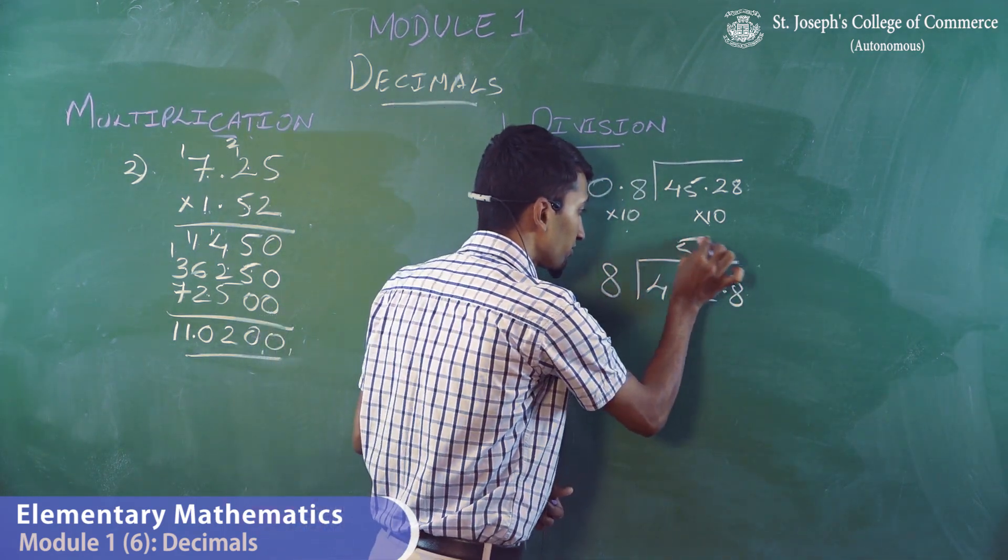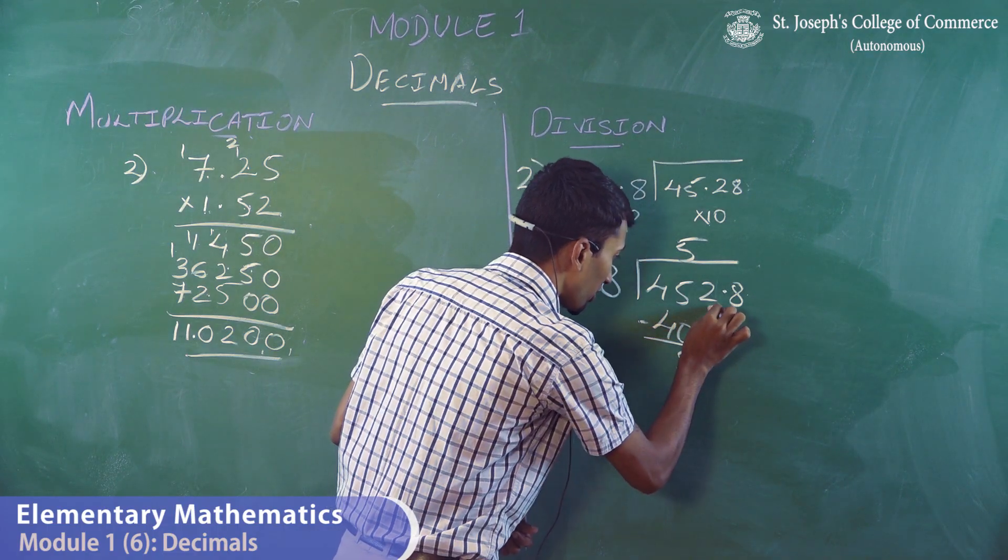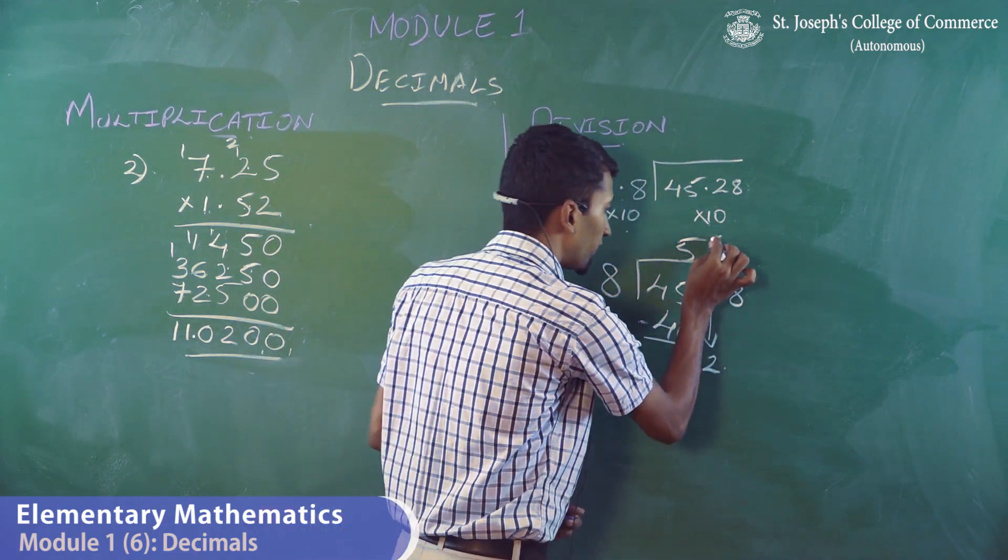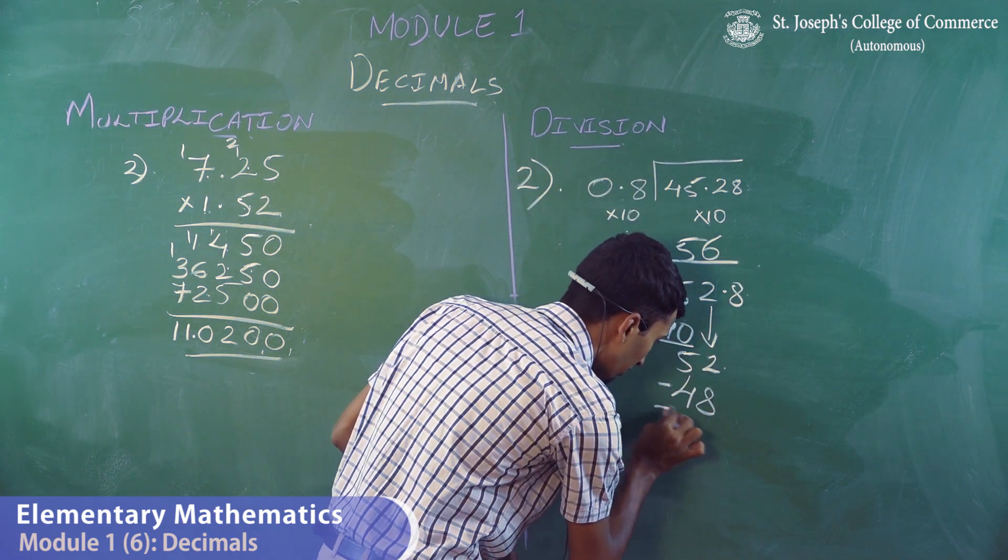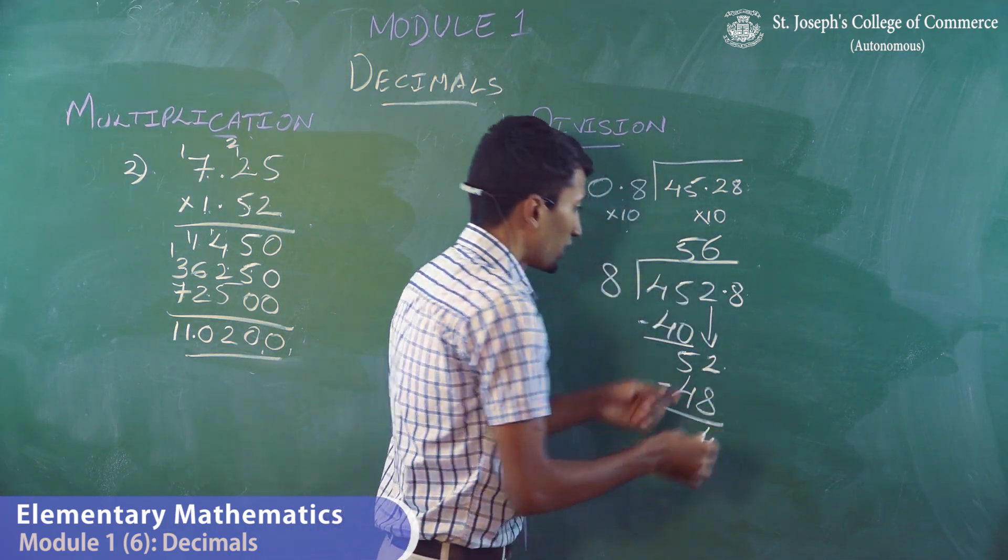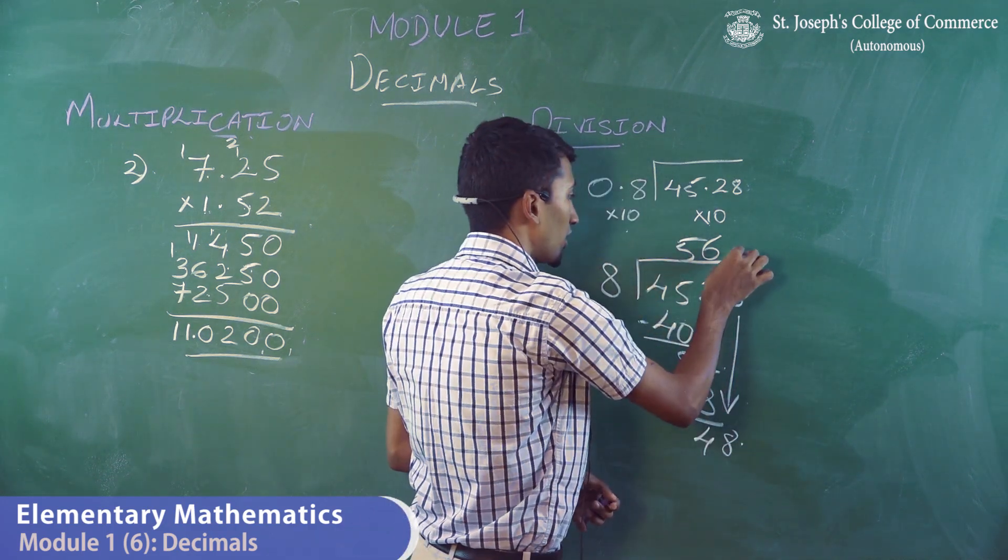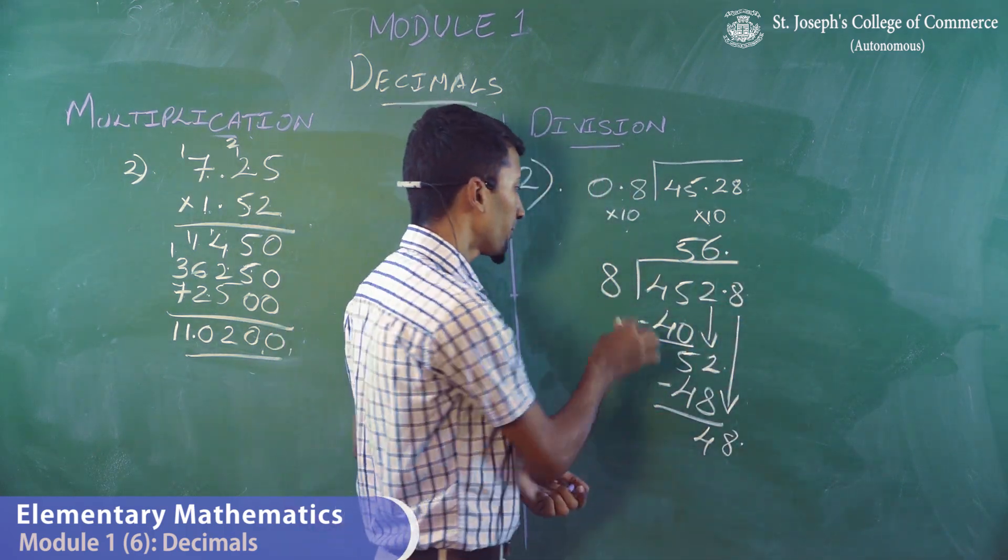Now, 8, 5s are 40, minus, you get 5, get 2 down. Now 8, 6s are 48, minus, and you get 4. Now, get 8 down, and you get 48. Now, since 8 is after the decimal, so you have to put a decimal point.